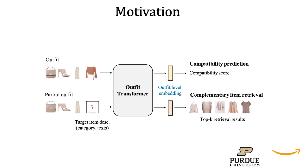The outfit representation learned in this manner is invariant to the order of items, and the Transformer is a suitable choice because it captures higher-order relationships — beyond pairwise — between all the items in the outfit, and is able to take unordered sets as input.